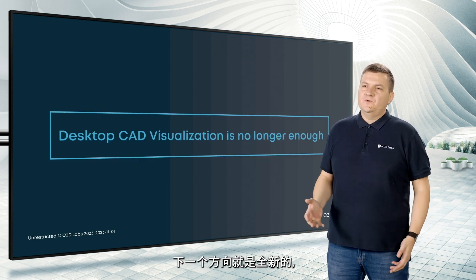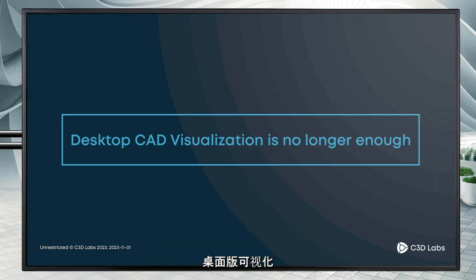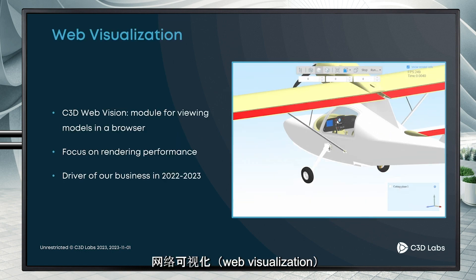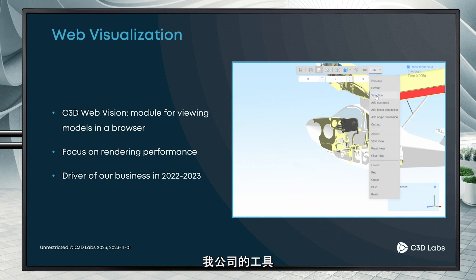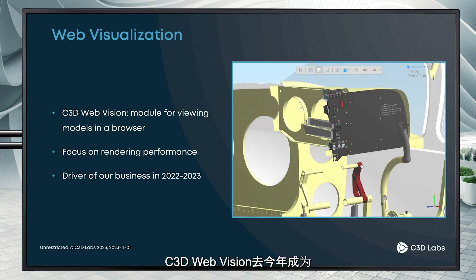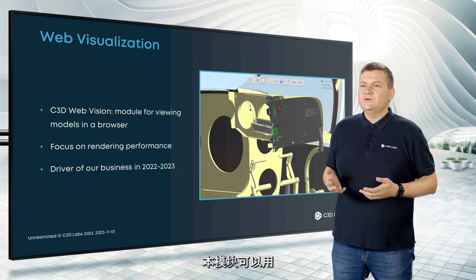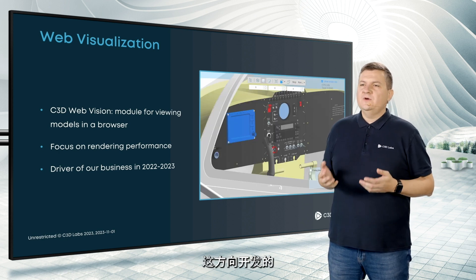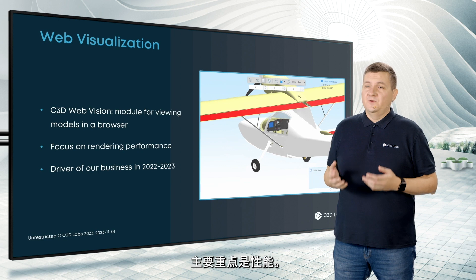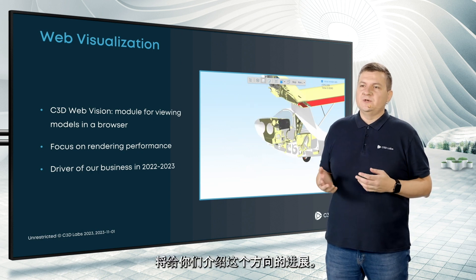The next direction is new for us but grows very fast. Desktop visualization is not enough for engineering software today. Web visualization becomes more and more popular in PDM and BIM. Our tool for that, C3D Web Vision, became one of the main drivers for our business last year and this year. This module allows you to view geometric models in a browser, and one of the main focuses of its development is performance. What we have achieved, Artem Maksimenko will tell you later.